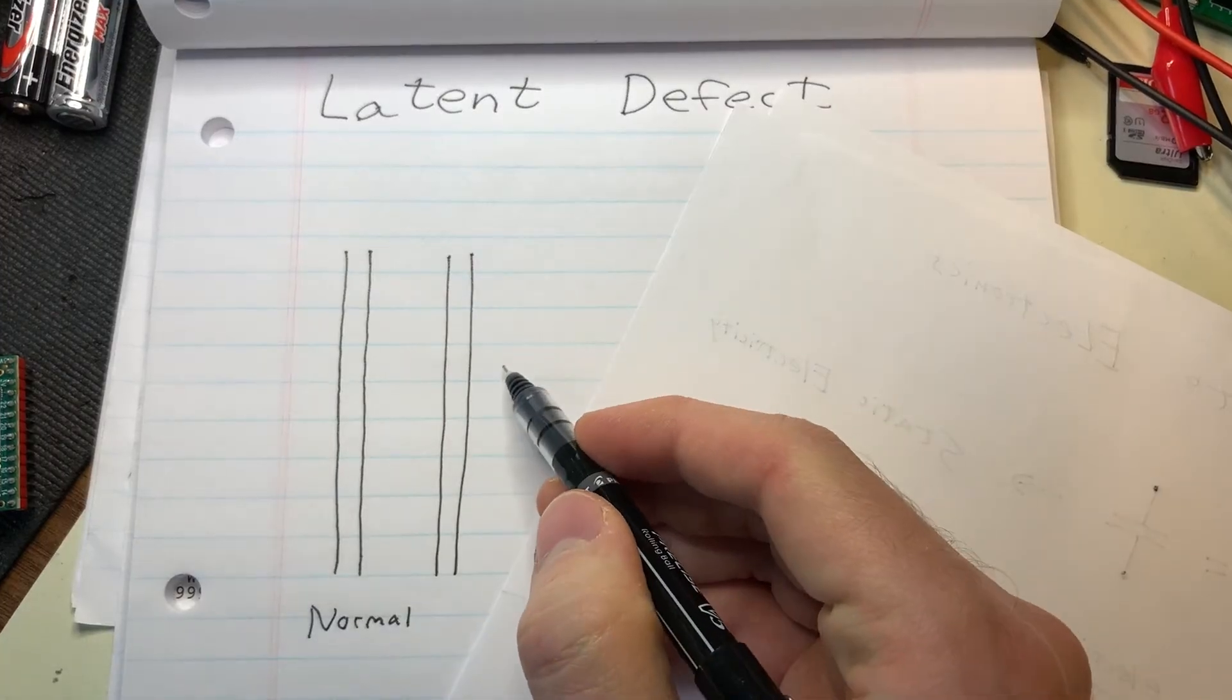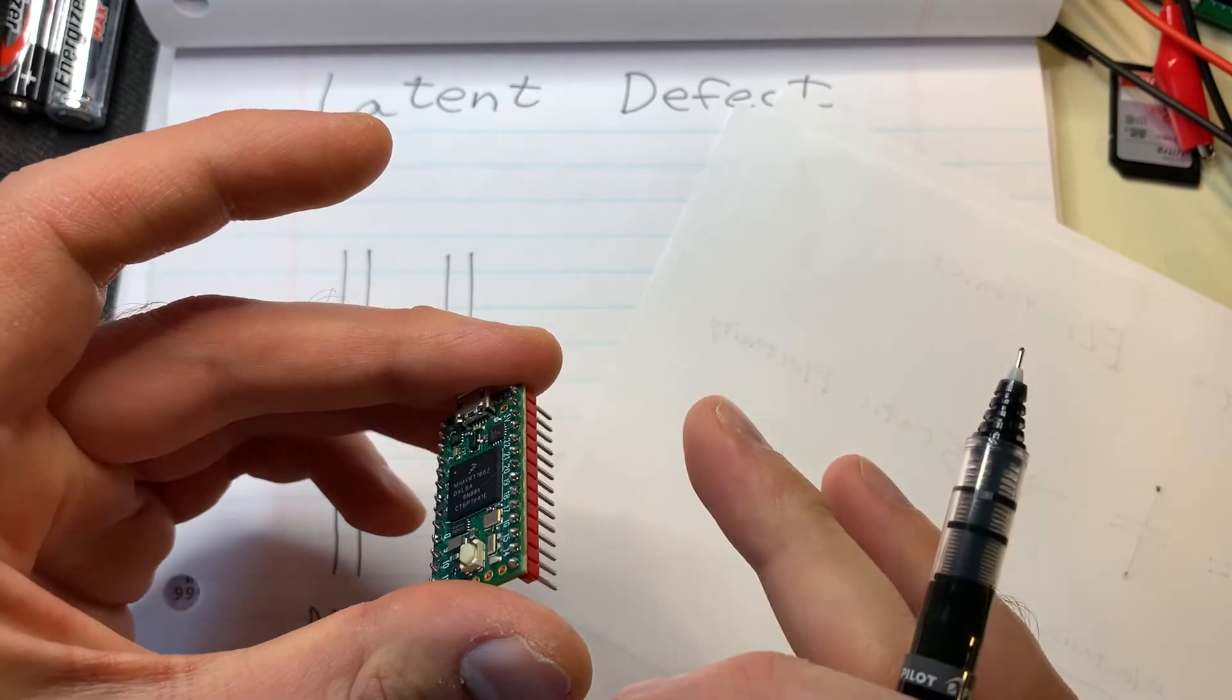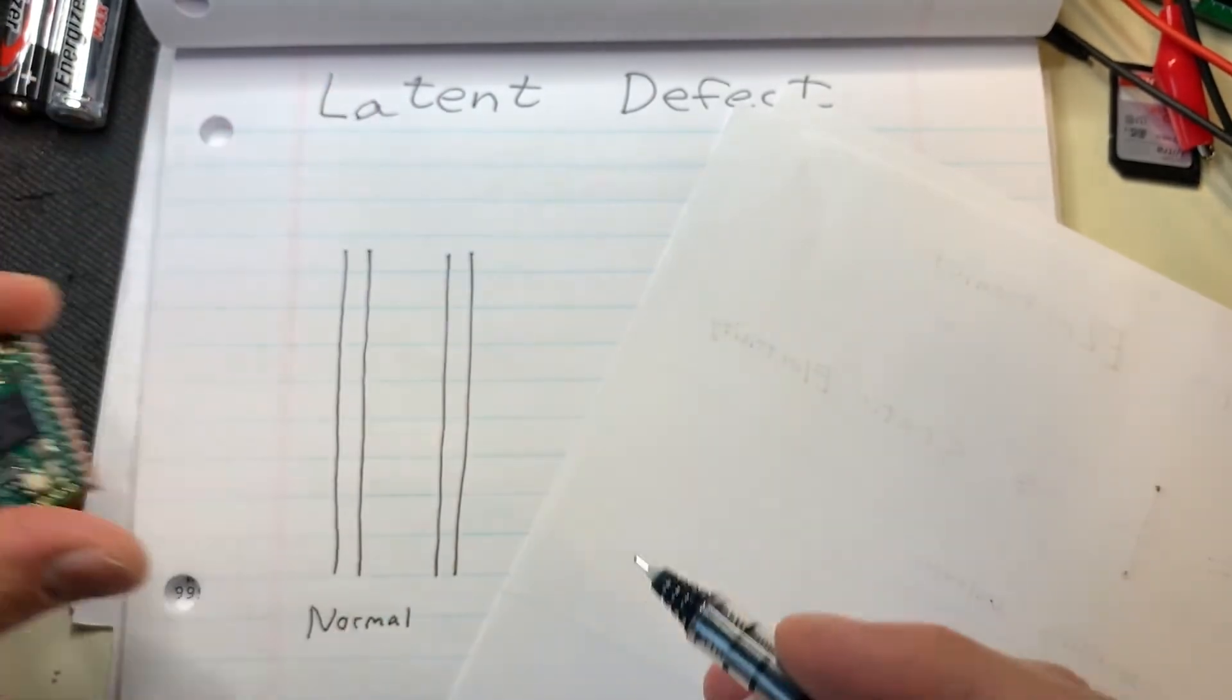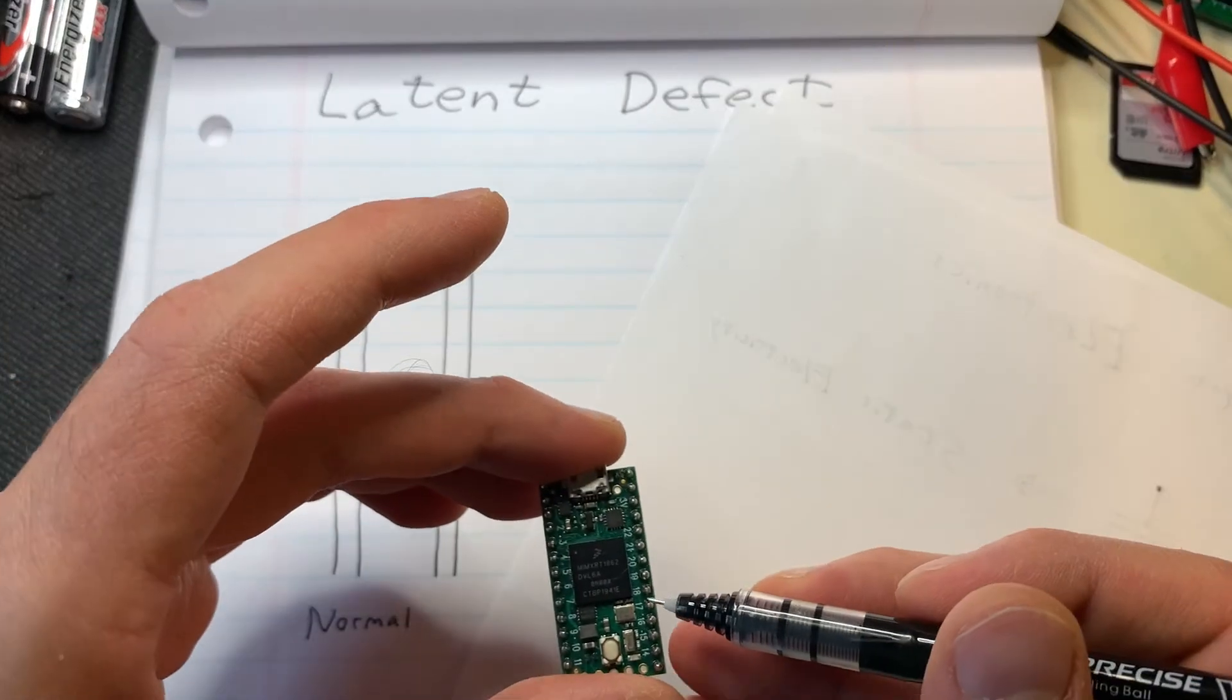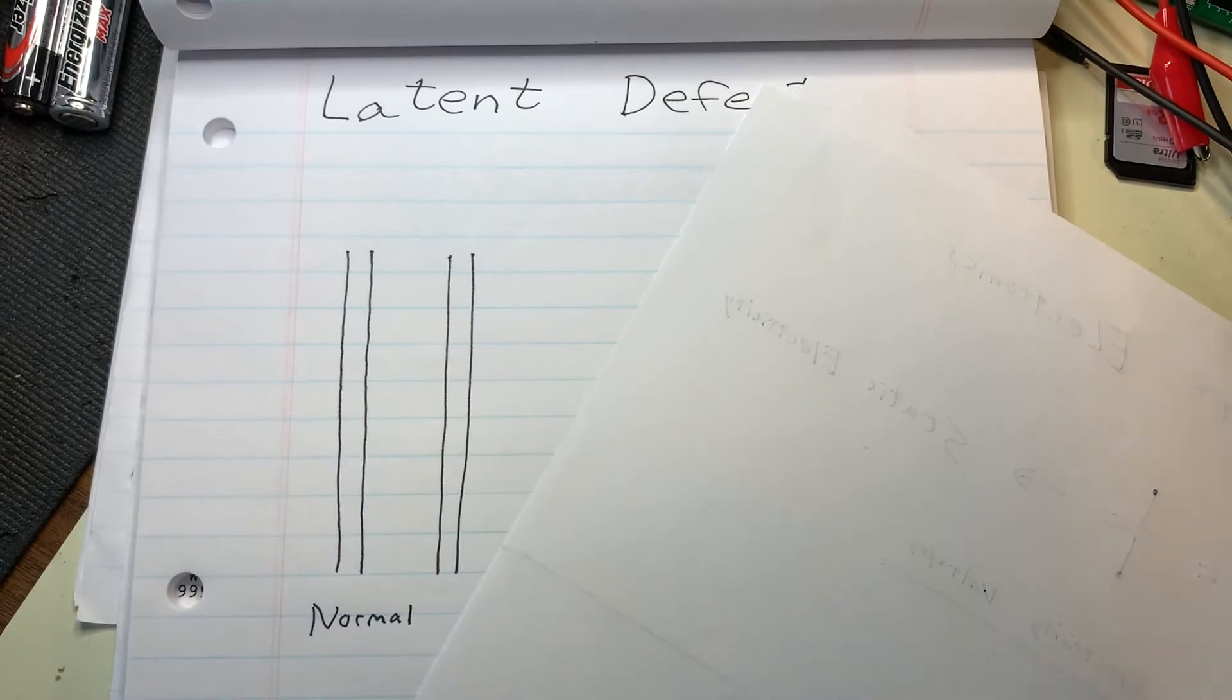But if you imagine if I came into contact with this and I had a substantial amount of static charge that discharged onto one of these components, what could happen is that it could go inside of one of these devices and damage one of these traces. So it ends up looking like this.